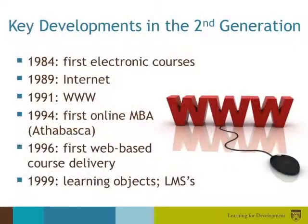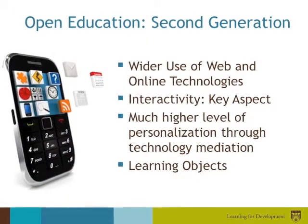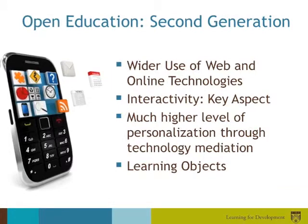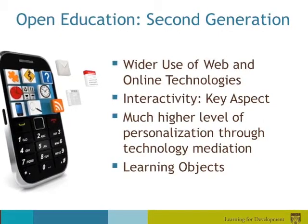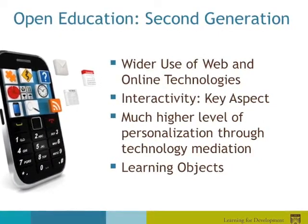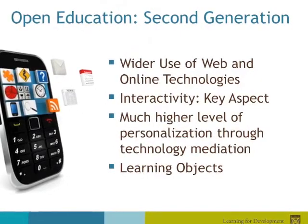The second generation of open education was shaped by the emergence and use of the Internet and the World Wide Web. The first electronic course was launched in 1984 and the use of web-based programs allowed learners the choice to study on campus or at a distance. Interactivity was a key aspect of the second generation, with a high level of personalization through the use of ICTs. This led to more flexible and blended approaches, and many campus-based institutions began to offer both face-to-face and distance learning programs, thereby opening up access to newer constituencies.